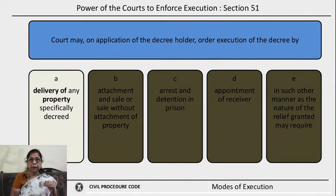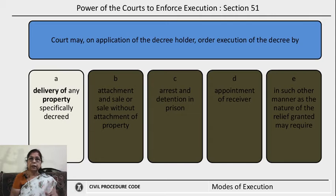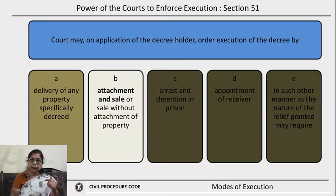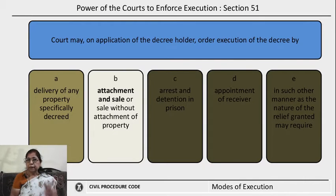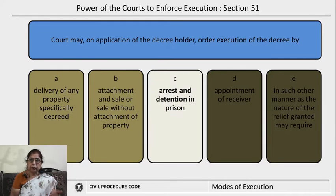The first mode is by ordering delivery of any property which is specifically decreed — whichever property is to be handed over to the decree holder, the court may pass an order for that. The second mode is the court may order attachment and sale of any property, or it may order sale without attachment. The third mode is the court may order arrest and detention in prison of the judgment debtor so that the decree is executed.